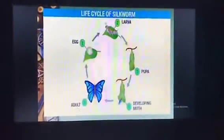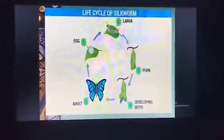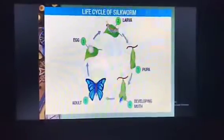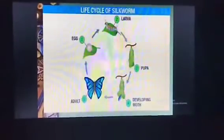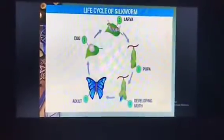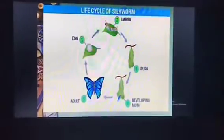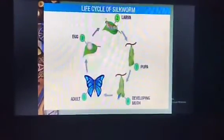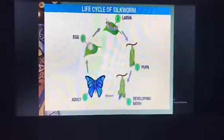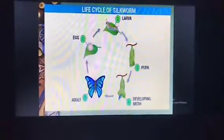Here is the diagram about the life cycle of the silkworm. It consists of five different stages: Egg, Larva, Pupa, Developing Moth, and Adult. The female moth again lays eggs and repeats the first stage, and hence this is called the life cycle of the silkworm.